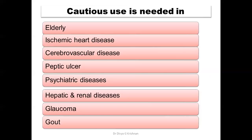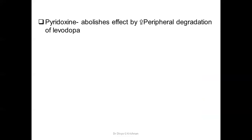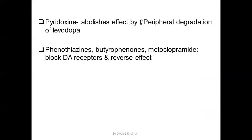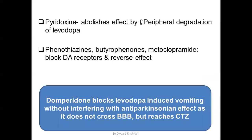Levodopa must be used cautiously in the elderly and in patients with ischemic heart disease, cerebrovascular disease, peptic ulcer, psychiatric conditions, hepatic and renal diseases, glaucoma, and gout. Regarding drug interactions: pyridoxine abolishes the effect of levodopa by increasing its peripheral degradation. Antipsychotic drugs such as phenothiazines and butyrophenones, and the antiemetic metoclopramide, block D2 receptors and can reverse the effect of levodopa.